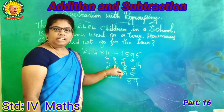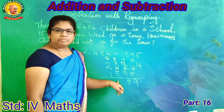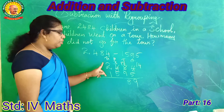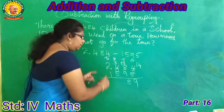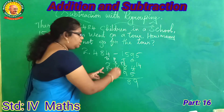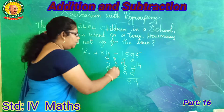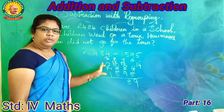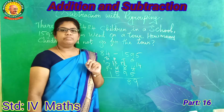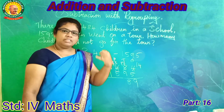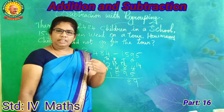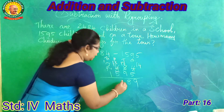Look at hundreds: 300. We need to subtract 500, which is a smaller value on top, so we borrow from thousands. Borrow 1 thousand, making it 13 hundreds. Counting from 5: 6, 7, 8, 9, 10, 11, 12, 13 — that gives 8 in the hundreds place.